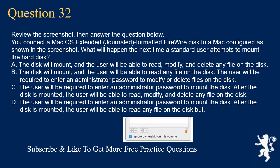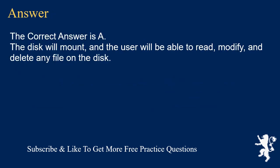Question 32. Review the screenshot, then answer the question below. You connect a Mac OS Extended (Journaled) formatted FireWire disk to a Mac configured as shown in the screenshot. What will happen the next time a standard user attempts to mount the hard disk? A. The disk will mount, and the user will be able to read, modify, and delete any file on the disk. B. The disk will mount, and the user will be able to read any file on the disk; the user will be required to enter an administrator password to modify or delete files on the disk. C. The user will be required to enter an administrator password to mount the disk; after the disk is mounted, the user will be able to read, modify, and delete any file on the disk. D. The user will be required to enter an administrator password to mount the disk; after the disk is mounted, the user will be able to read any file on the disk but not modify or delete. The correct answer is A: The disk will mount, and the user will be able to read, modify, and delete any file on the disk.